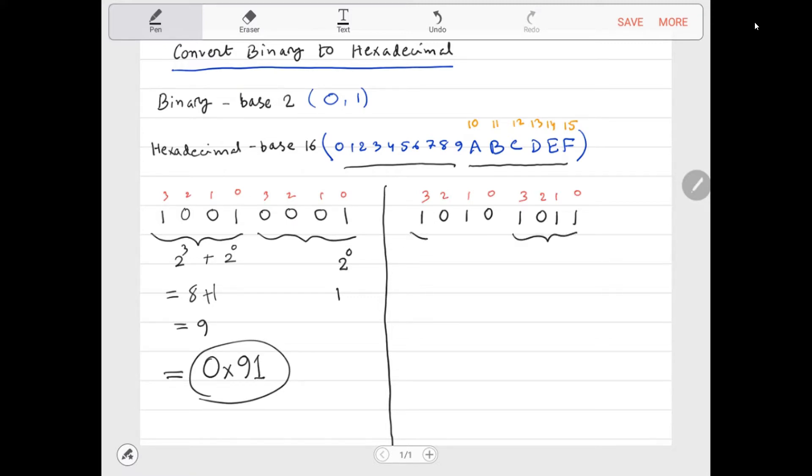Let's do another one here. Again, always separate the binary in groups of four. Here you have 2 to the power of 0 plus 2 to the power of 1 plus 2 to the power of 3. Here you have 2 to the power of 1 plus 2 to the power of 3. You get 8 plus 2, you get 8 plus 2 plus 1, so you get 10 here and you get 11 here.